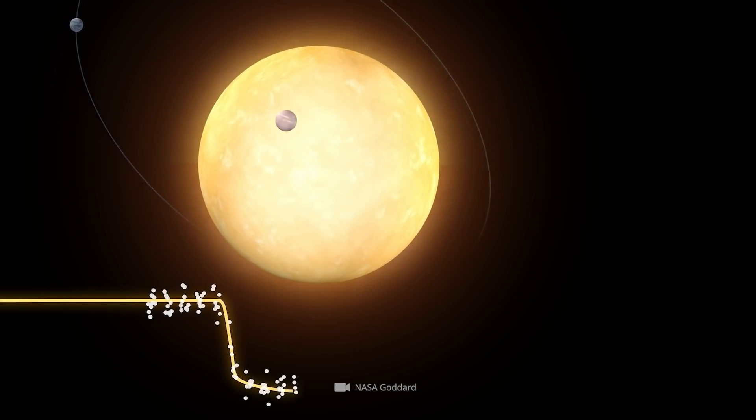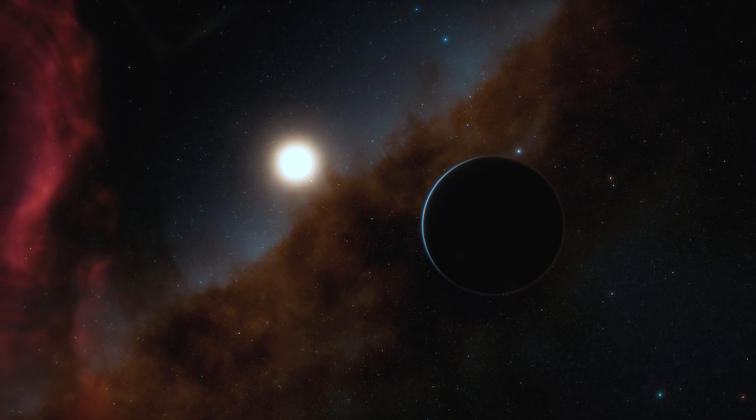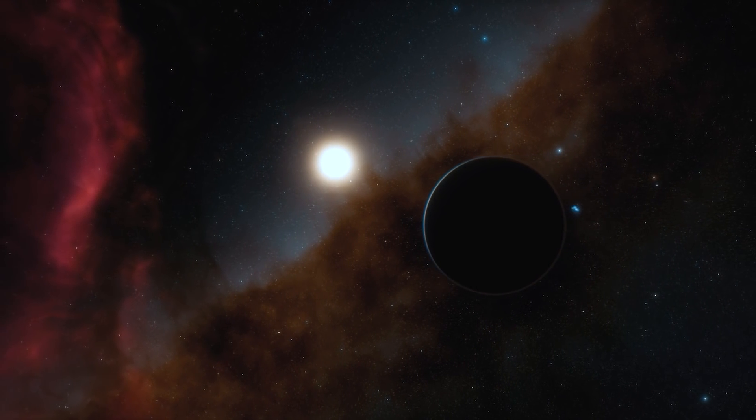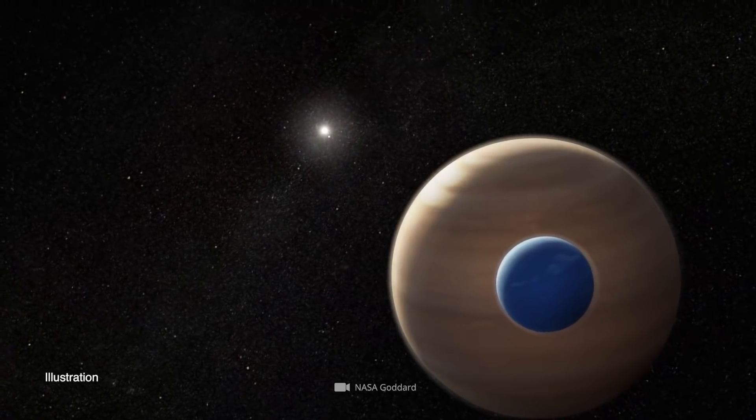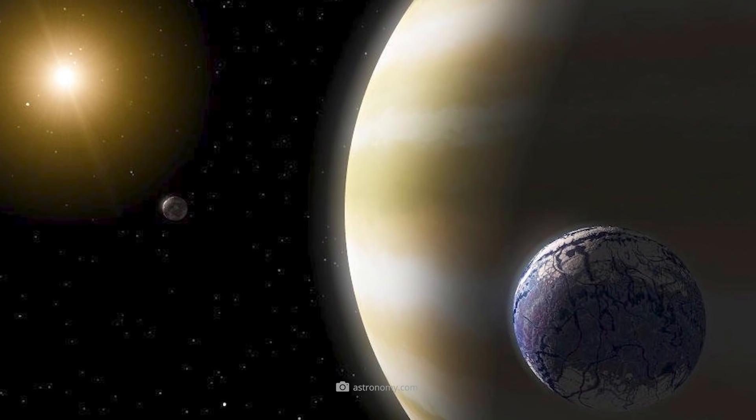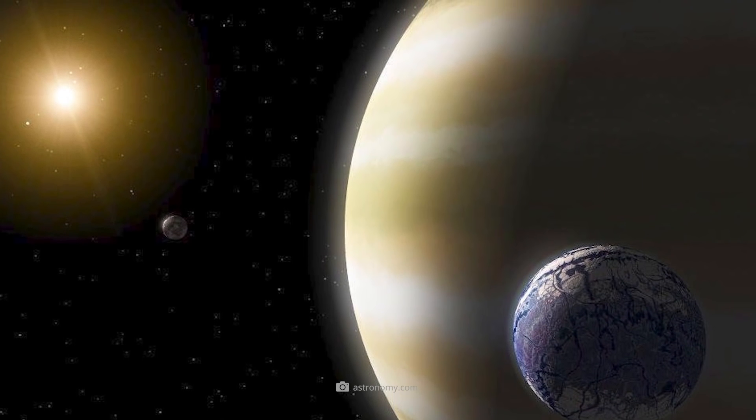Discovered based on the transit method by the Kepler Space Telescope in 2016, the distant celestial body has a diameter that exceeds that of our blue home planet by at least six times. Specifically, the gas giant Kepler-1625b could be comparable in size to Jupiter while possessing 10 times its mass.